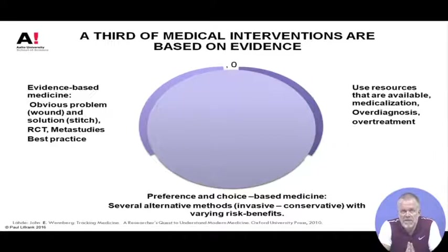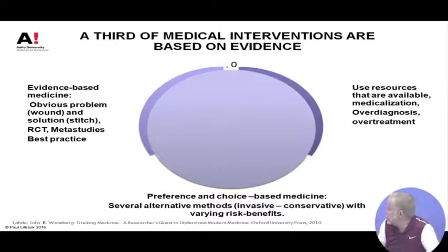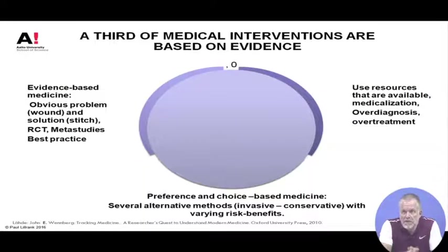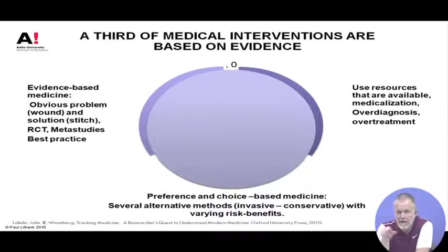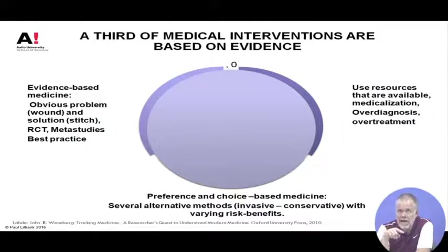This is an interesting summary of research done by an American professor called John Wennberg, who published a very interesting book called Tracking Medicine: Researchers' Quest to Understand Modern Medicine — well worth reading if you're interested in this topic. Wennberg studied the question of what is the relation between supply and demand in healthcare, what determines the demand, and is there a connection between supply and demand. He says that if you think of all the things that doctors do, one third is evidence-based.